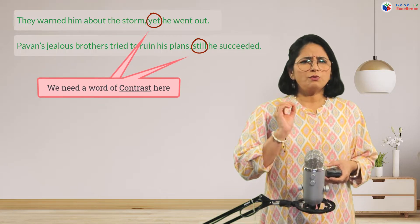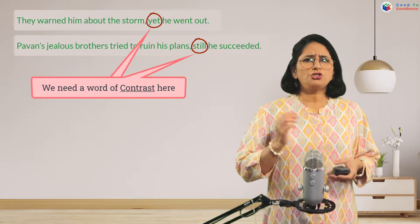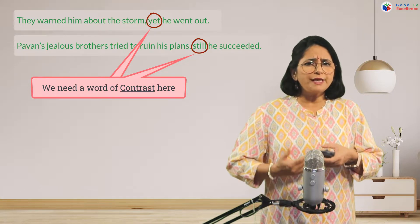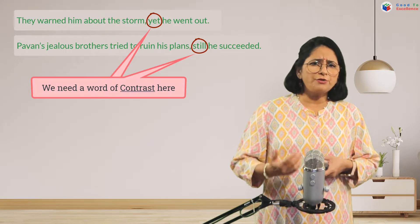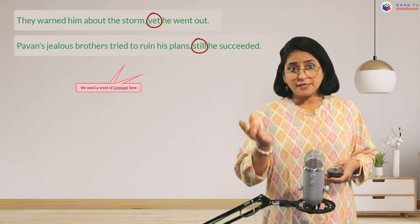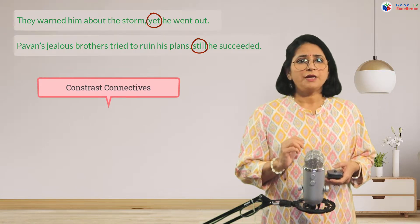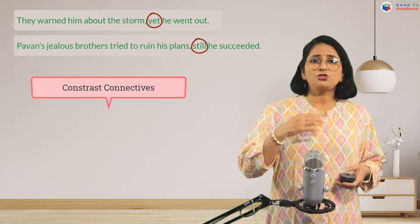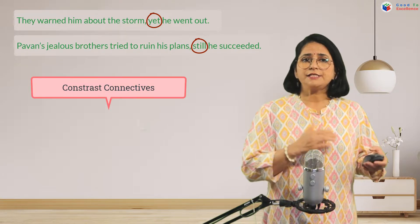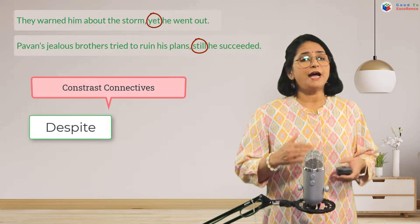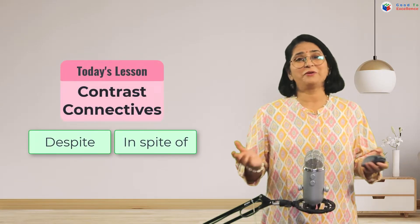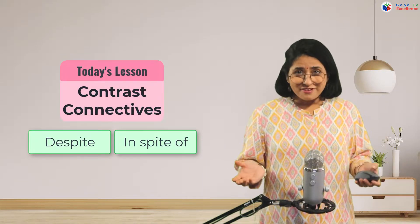We use a word of contrast to show that something has to overcome something else in order to happen — a contrast connective. We have such connectives to show a contrast, and they are 'despite' and 'in spite of.'